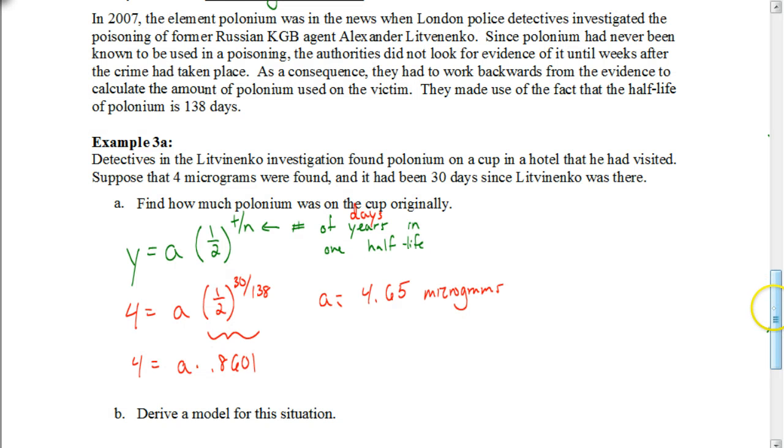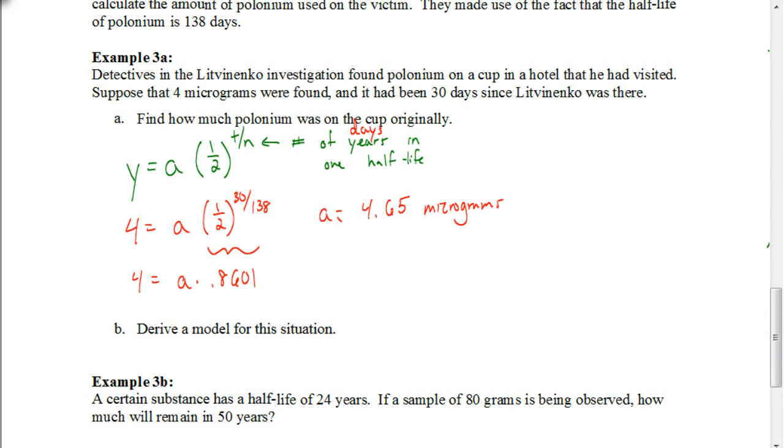Now it says derive a model for the situation. So we know now our initial value. Instead of using what we had as 4 and the 30, we're not going to use that right now. So our equation would be y equals your initial amount, 4.65. Our value for b is going to be one-half. Our exponent is going to be t divided by, and for polonium, your half-life is 138 days. So we're going to have t divided by 138.